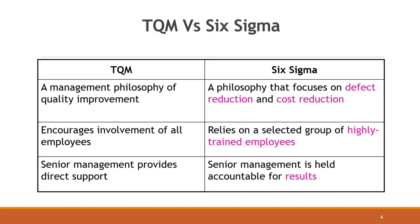Comparing TQM and Six Sigma: Total Quality Management defines quality as a process to meet standards established by the organization, whereas Six Sigma defines it as the process with the minimum amount of defects. TQM requires a management philosophy of quality improvement, while Six Sigma focuses on defect and cost reduction. TQM encourages involvement of all employees, whereas Six Sigma depends on selected groups of highly trained employees, and senior management is held accountable for results.